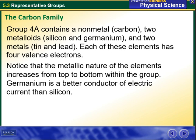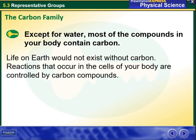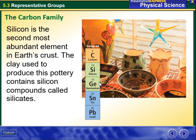The carbon family, group 4A, contains the non-metal carbon, two metalloids — silicon and germanium — and two metals — tin and lead. Each of these elements has four valence electrons. Silicon is the second most abundant element in Earth's crust. The clay used to produce pottery contains silicon compounds called silicates.